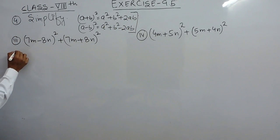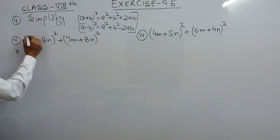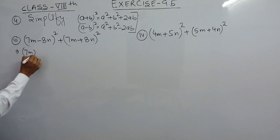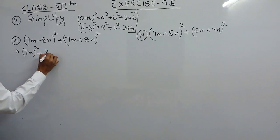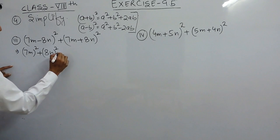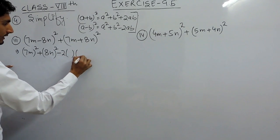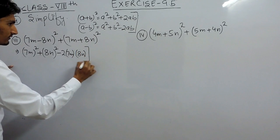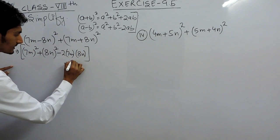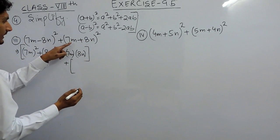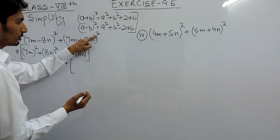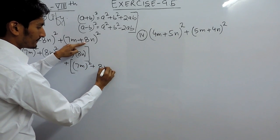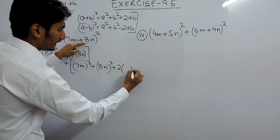Now to solve the first expression, this is (a - b) whole square, where a is 7m and b is 8n. So (a - b)² = a² + b² - 2ab, giving us (7m)² + (8n)² - 2 × 7m × 8n. The second expression is (a + b) whole square, so it equals a² + b² + 2ab.